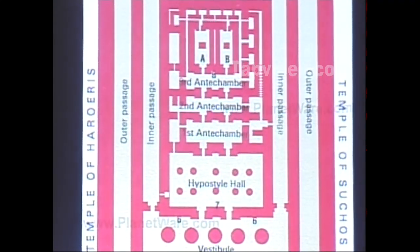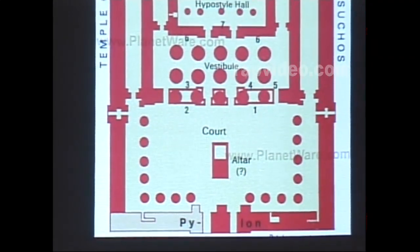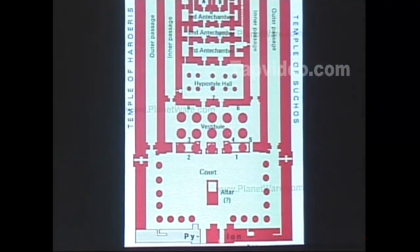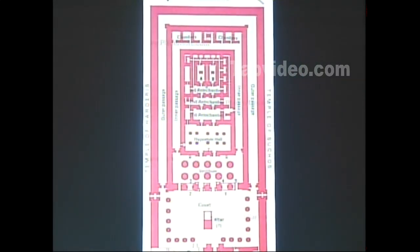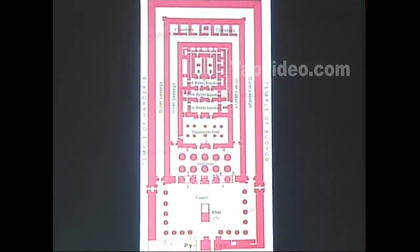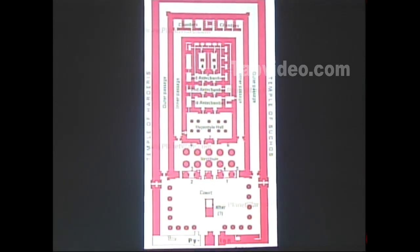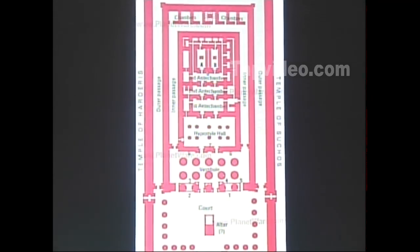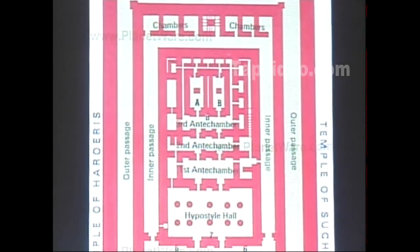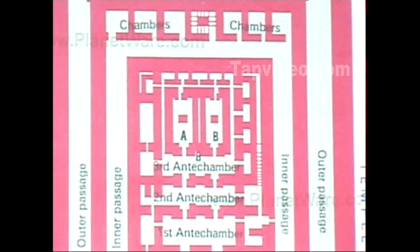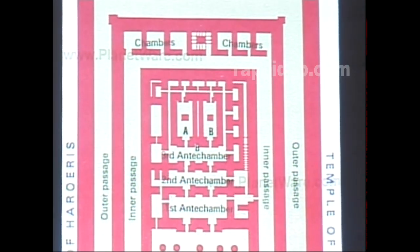The temple of Kom Ombo — here's the floor plan so we can get an idea of the two entrances. We go into the peristyle court, then into a hypostyle hall, and the antechambers — all exactly the same. You have A and B for the two holy of holies. Everything that you see on one side is on the other side, but they're dedicated to two different gods.